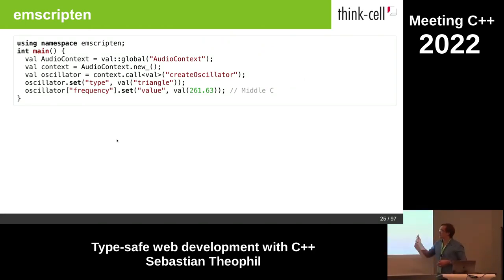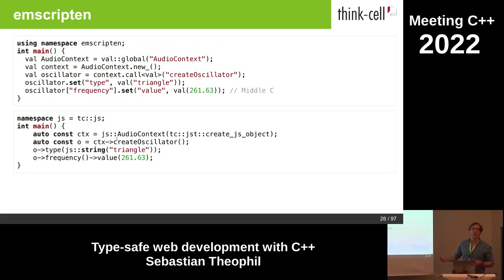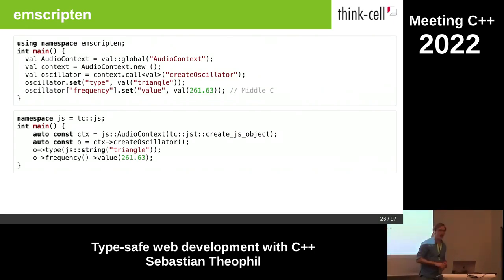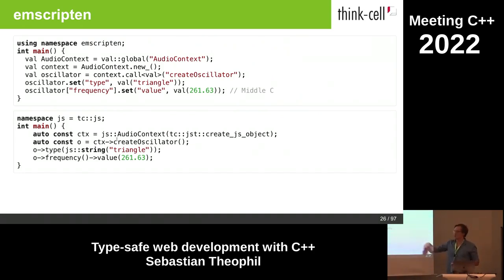But we don't want to write it like that. We want something like my initial code example — with actual types that the compiler can check against, with actual functions whose arguments have a type, and we want to check against those types. This is what we can do with my TypeScript tool.